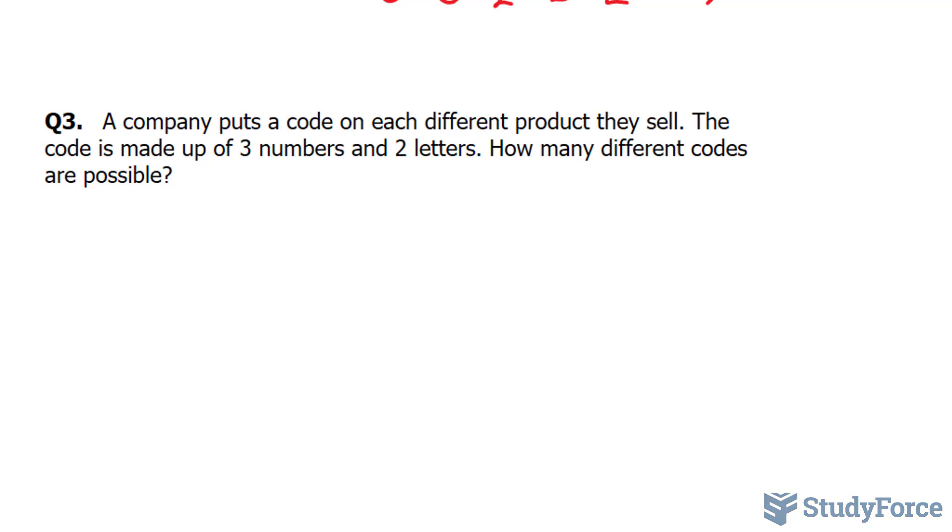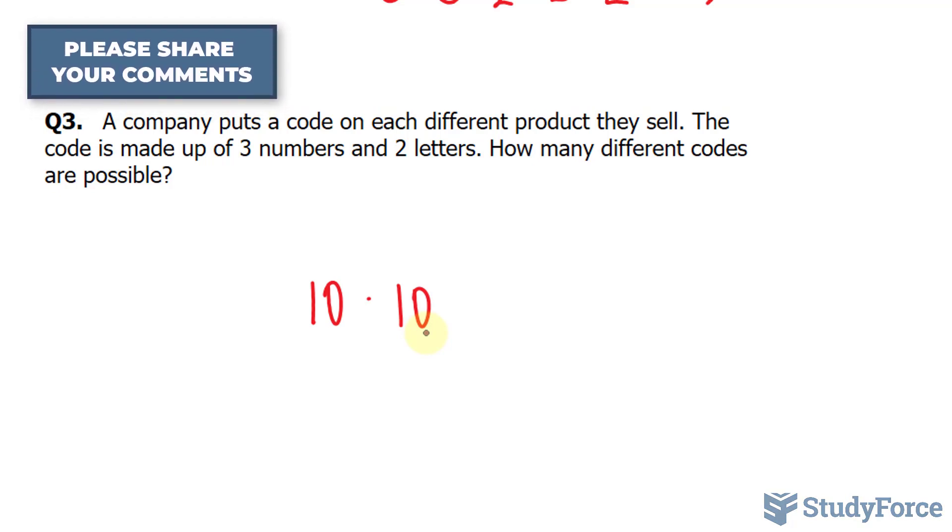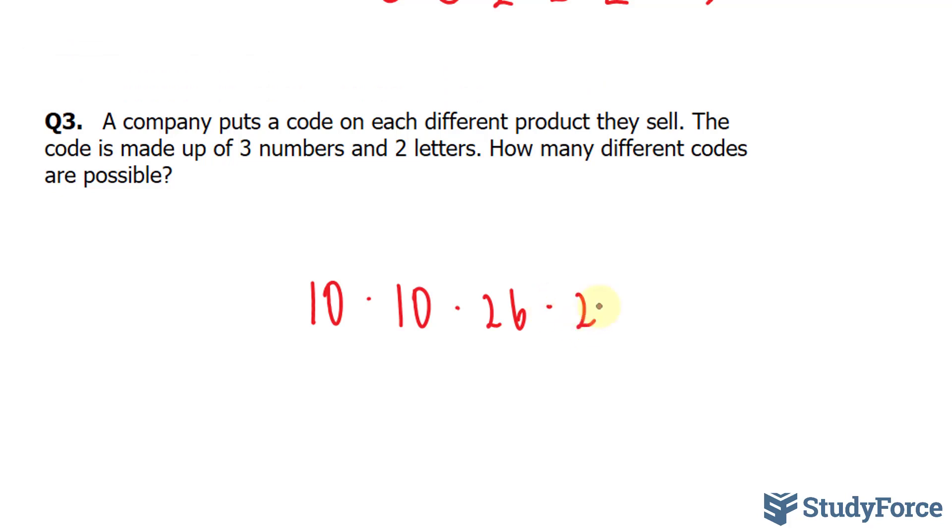So in our first stage, let's say we encounter a number. There are ten possible numbers, zero through nine. So ten times, let's say we encounter another number. Zero through nine, that's a total of ten. And then we encounter a letter. It doesn't matter, you can continue with another number. It's not going to change the outcome here. But if you encounter a letter, you have from A through Z, that's 26 possibilities. Another letter would be 26.